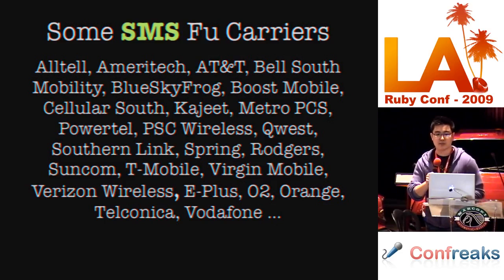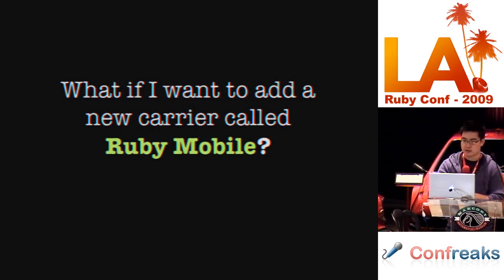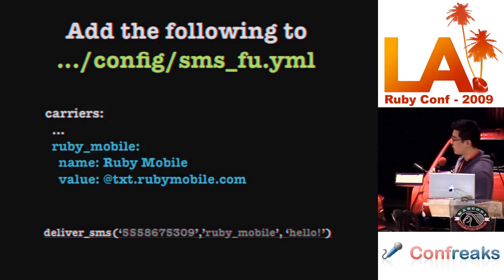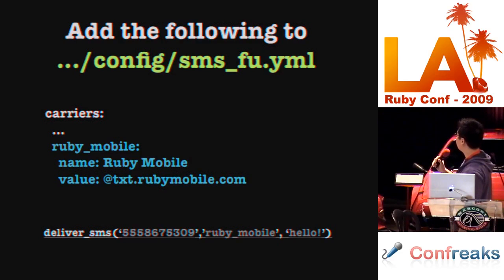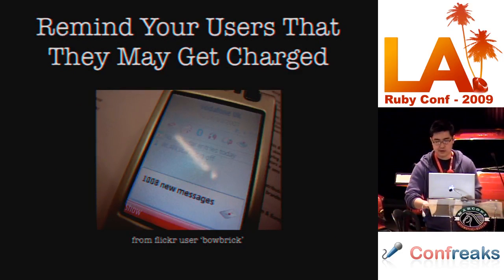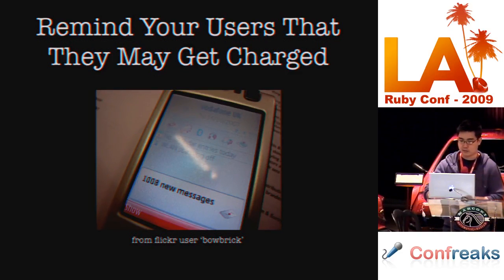Here are some SMS Foo carriers — this is just a partial list; there are quite a few more, including international carriers. Adding your own carrier is easy: you open `sms_fu.yml` under carriers, add the name (like RubyMobile) and its SMS domain value. Then all you have to do is call `deliver_sms` with the number, `ruby_mobile`, and your message. And if SMS is free for you, make sure you let your users know it could still cost them money — I found a photo on Flickr called 'Twitter Gone Bad' showing someone who got hit with a huge bill.